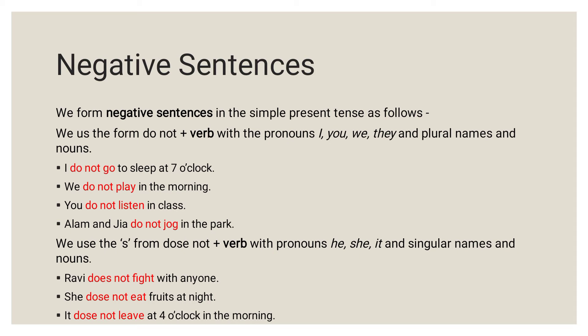With pronouns I, you, we and they, and with plural names also, we use 'do not' plus verb. Now, we use 'does not' plus verb with pronouns he, she, it, and singular names and nouns. If a singular name is given, or the pronoun is he, she, or it, then we will be using 'does not' plus verb to frame a negative sentence.